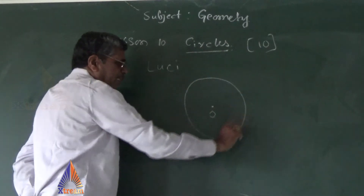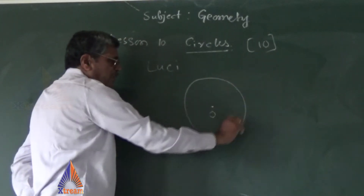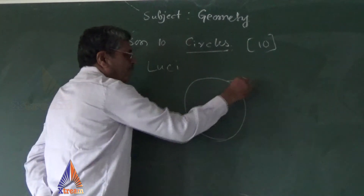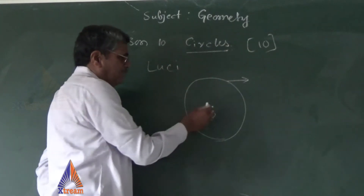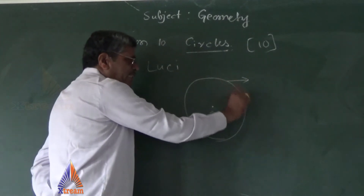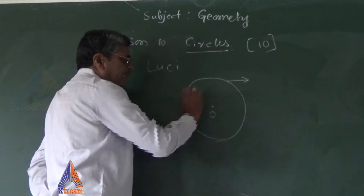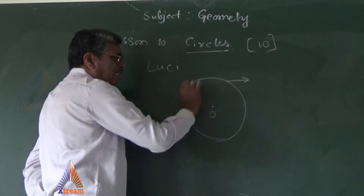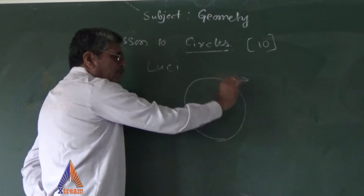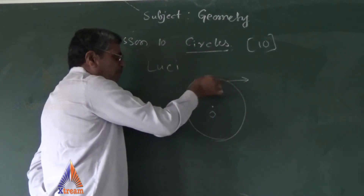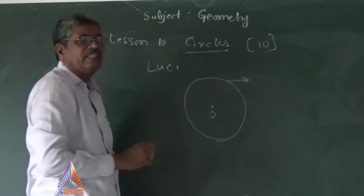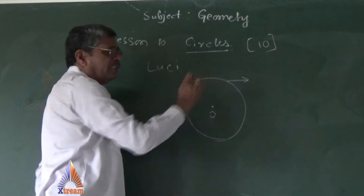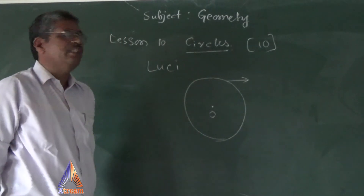The curved surface is the circumference — it is the boundary of the circle. For example, in cricket you can see a boundary, which is in the form of a circle. That curved line forming the circle is commonly called the circumference of the circle.